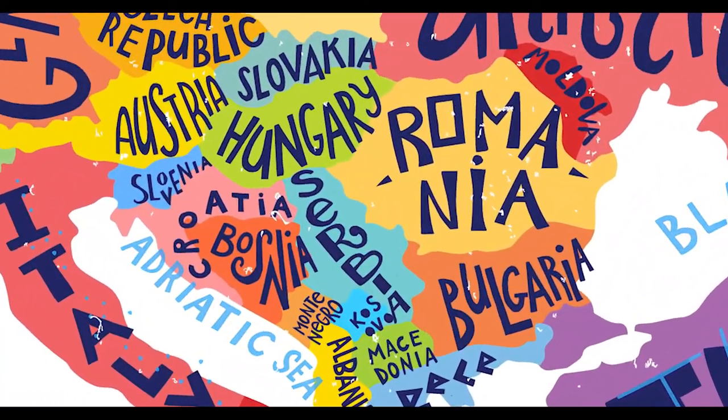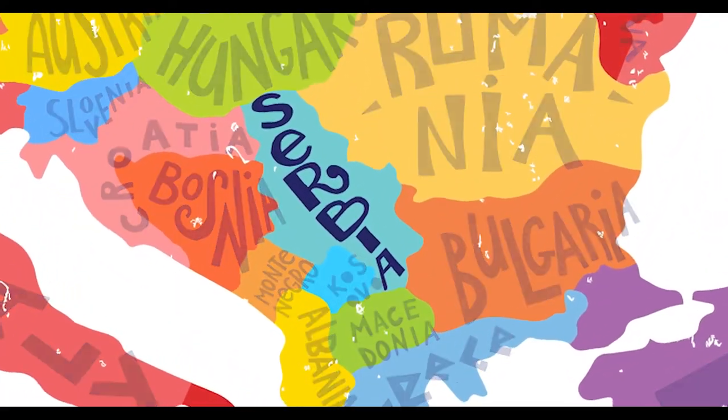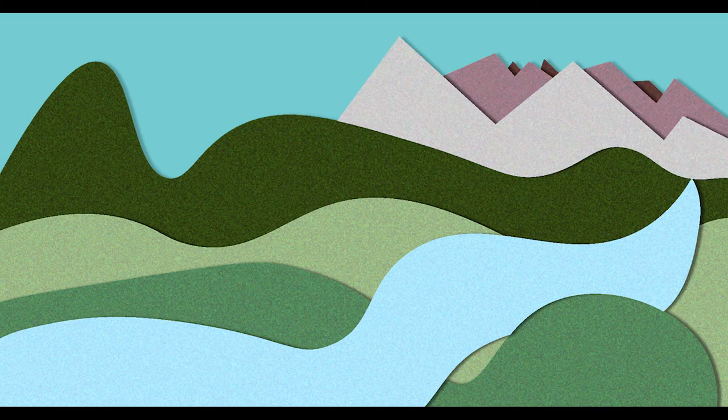Many miles away, between Hungary and Bulgaria, there is a country called Serbia. It is a beautiful country, with large rivers and tall mountains.